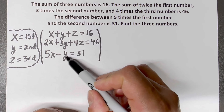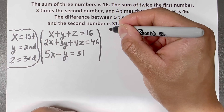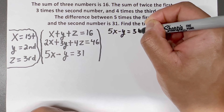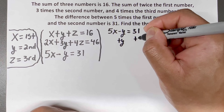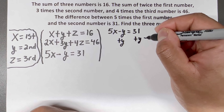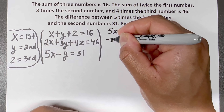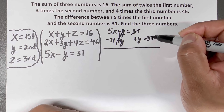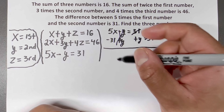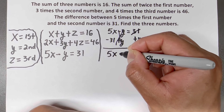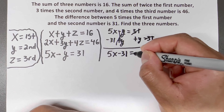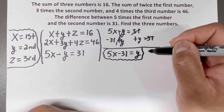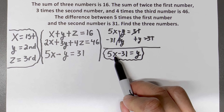The first thing I'm going to do is work with the bottom equation: 5x minus y equals 31. I'll add y to both sides and subtract 31 from both sides. That gives me 5x minus 31 equals y. So I've solved y in terms of x.